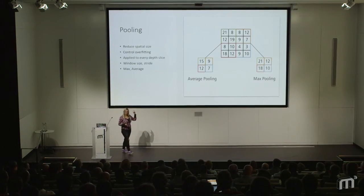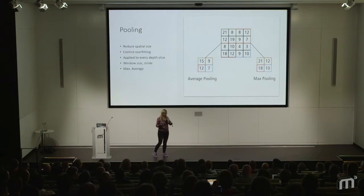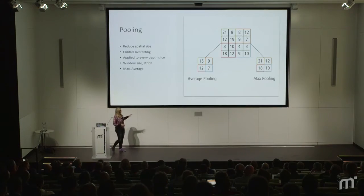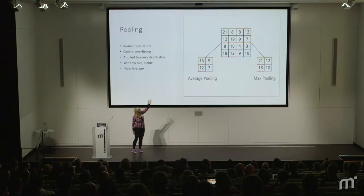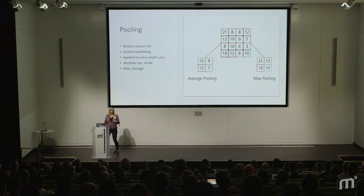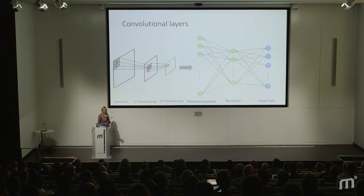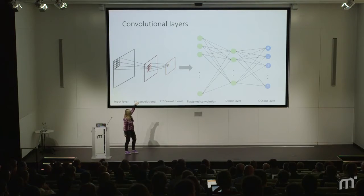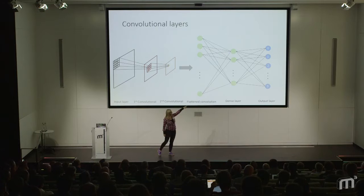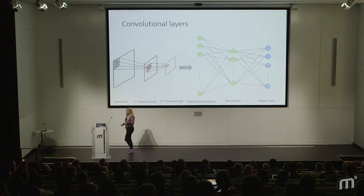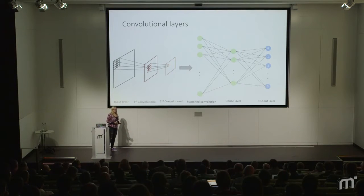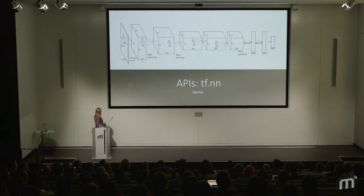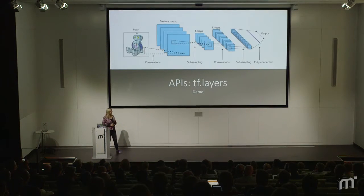Another technique used often with convolutional networks is pooling — going through patches and taking either average or maximum value. But you don't have to implement it yourself because TensorFlow has functions for that. So you can imagine building a deep neural network: two convolutional layers, flatten the results, then a dense fully connected layer, then output. TensorFlow gives you ways to do this with different packages — one is the TensorFlow neural network package, and another is layers.